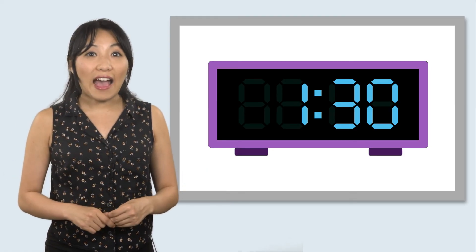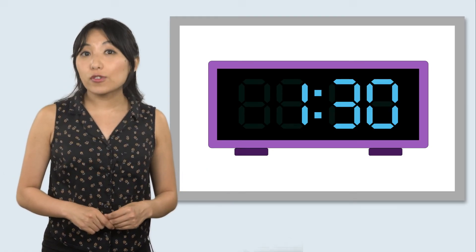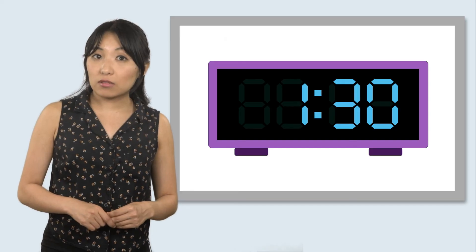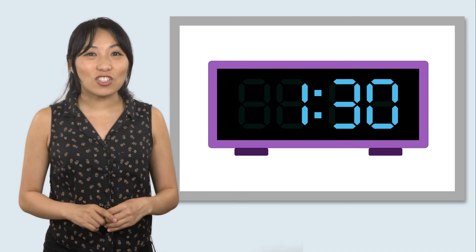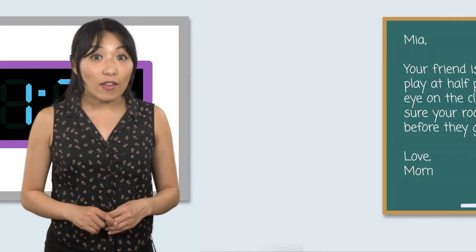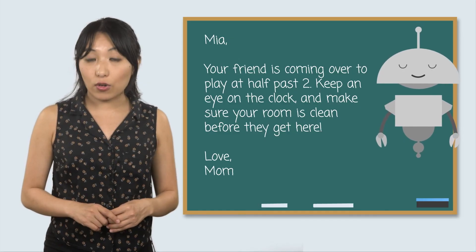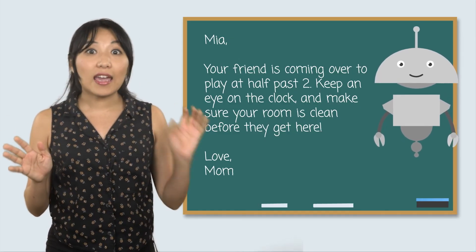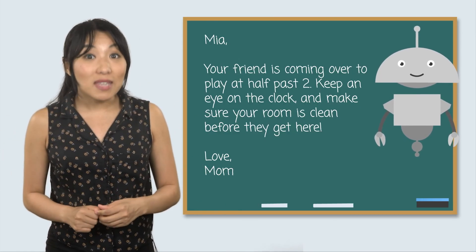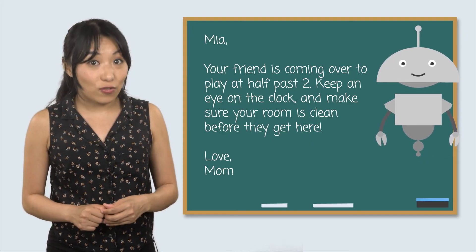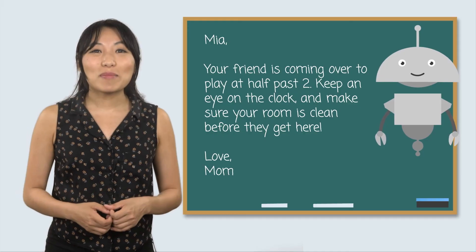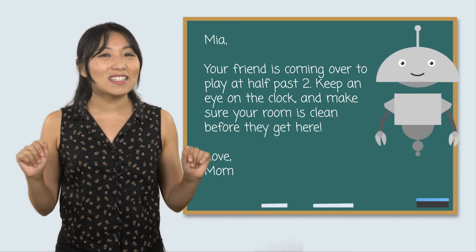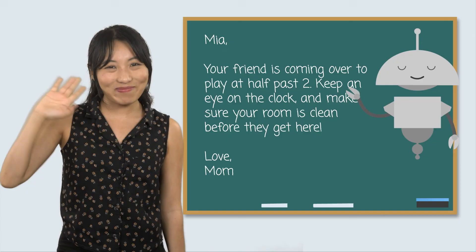Whenever we read a half past time, we can also say the hour followed by 30, like 10:30 or 2:30. See? You can read half past times on digital clocks, too. Now that we can read the time to the half hour on an analog clock and a digital clock, Mia can keep track of the time until her friend gets here. I'm glad you were here to help us. Remember, we have all the tools we need to solve any problem. See you next time.